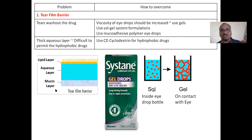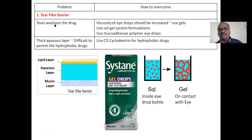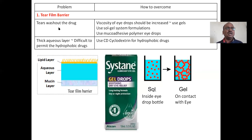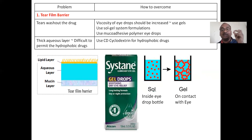For the tear film barrier, the drug molecule should have both lipophilic and aqueous properties. The main problem is that tears wash out the drug — tears come automatically and the thick aqueous layer washes the drug away. Therefore, the viscosity of the eye drops should be increased. If you instill water-like drops they will be washed out, so you prepare gels as eye drops.